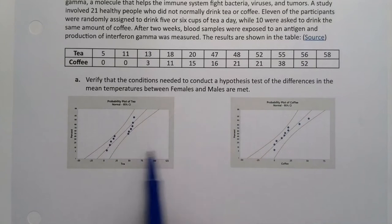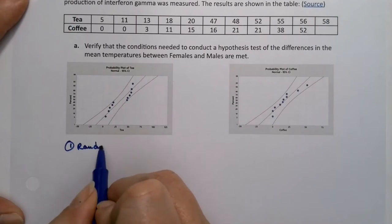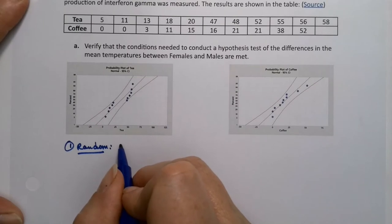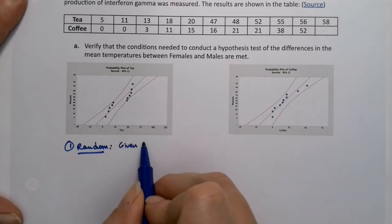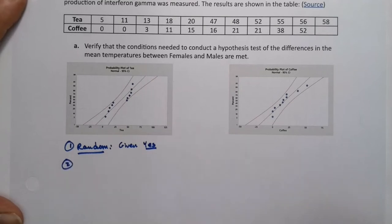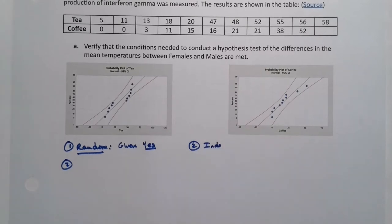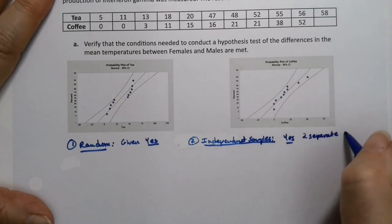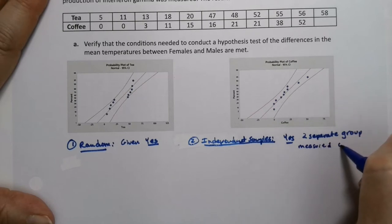We're going to verify requirements. So part one, I'm just going to write random, and it was given. It says that they're randomly assigned. We'll just assume it's either given or it's safe to assume. We don't do anything in this class that's not random, so that's yes. Step two, we need the samples to be independent of each other. And this is yes, this is two separate groups that they measured once. They measured at the end to find out their production of this interferon gamma.